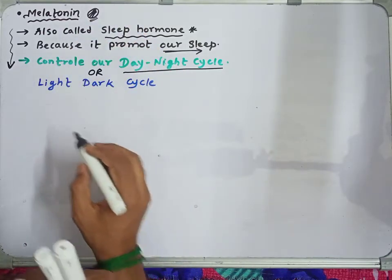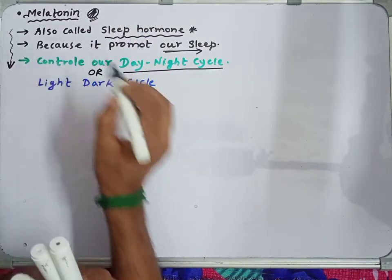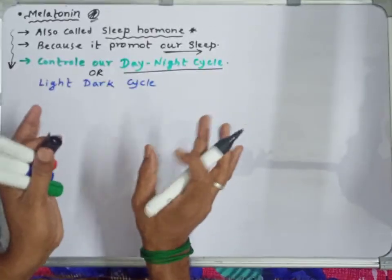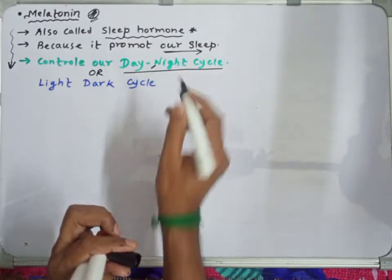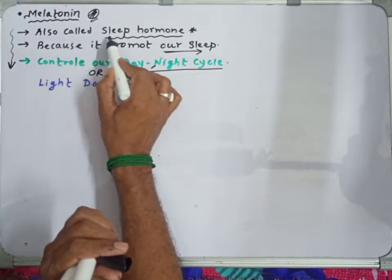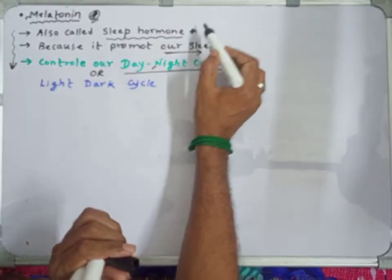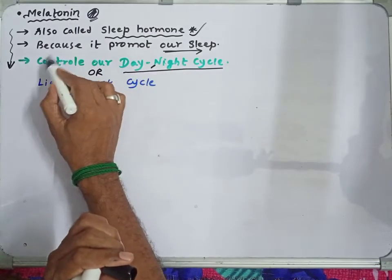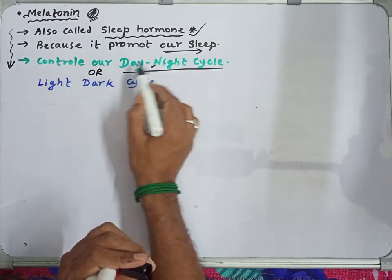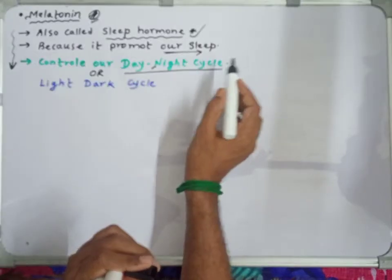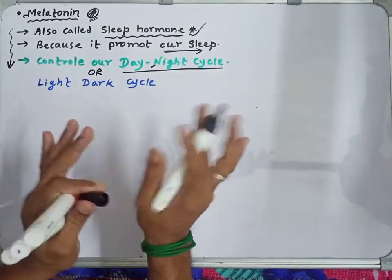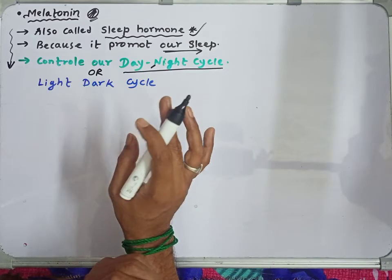The pineal gland's activity is under ongoing research. Melatonin is also called the sleep hormone — very very important for your MCQ. It is called the sleep hormone because it promotes our sleep and controls our day-night cycle or light-dark cycle.